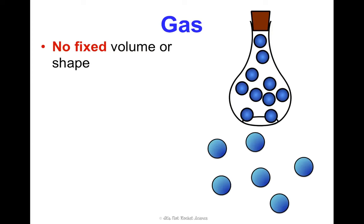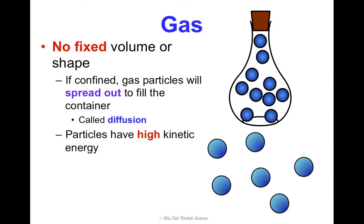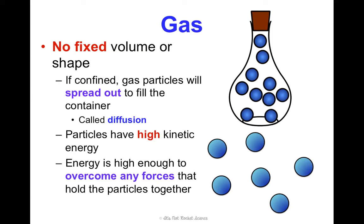Gases have no fixed volume or shape — it's really hard to contain them and measure the volume because it's not fixed. If confined in a container, the gas particles basically spread out. We call this diffusion — they spread throughout the container they are in. Think about making bacon: the smell is super strong in your kitchen, but then it diffuses and spreads throughout your entire house. Gases have the highest kinetic energy, and that energy is high enough to overcome forces holding them together, so they're actually freely moving independently from each other.